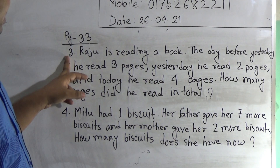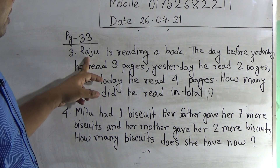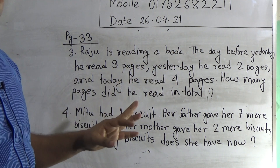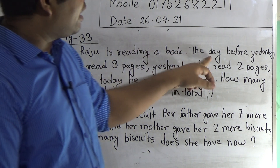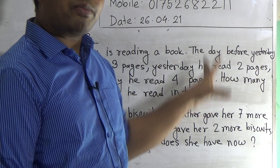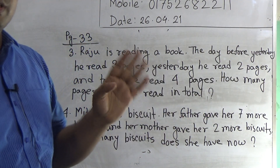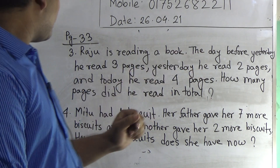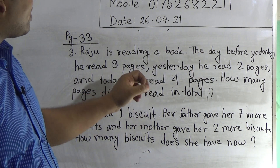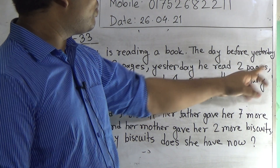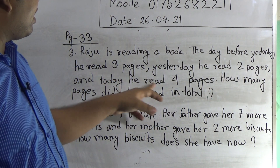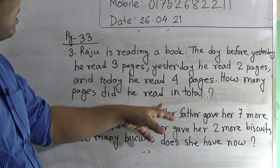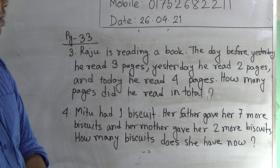Odd problem number 3: Raju is reading a book. That means Raju is a boy who reads a book. The day before Saturday, he read three pages. Saturday, he read two pages, and today he read four pages. How many pages did he read in total?